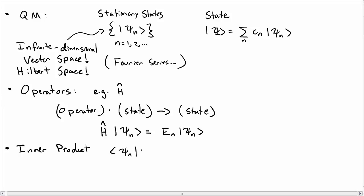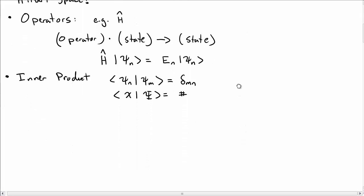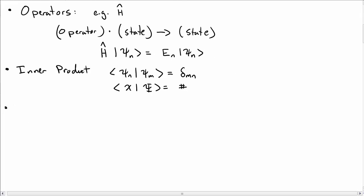Let's also remind ourselves about inner products. So we can take the inner product between two states. If they're stationary states, then we get delta mn. But I can take the inner product between any two states, and I'll get some kind of number, in general a complex number.